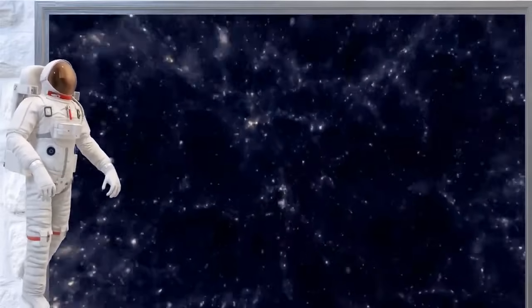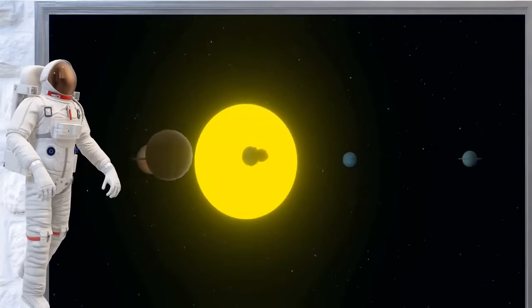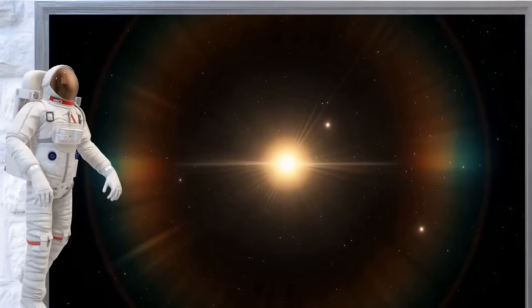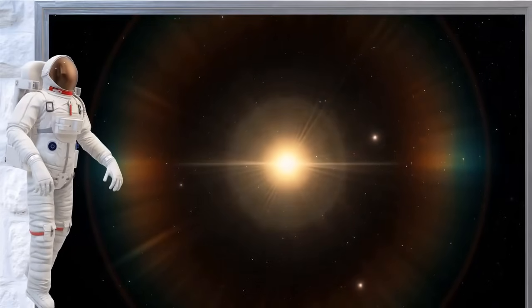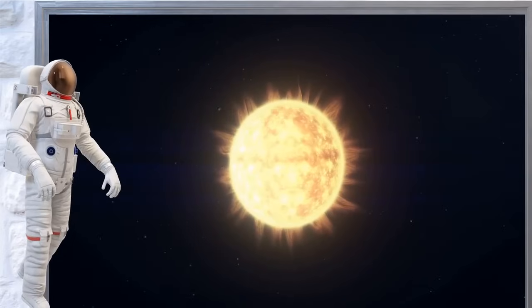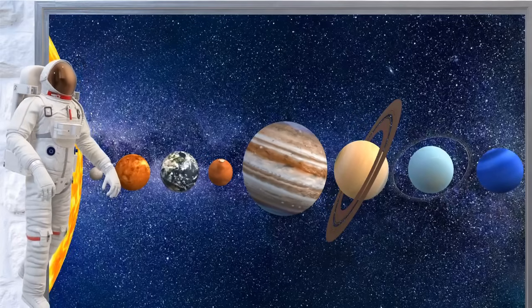The solar system is like a big family in space. It has 8 members called planets, and the head of this family is a huge, bright star called the Sun. The Sun is super important because it gives light and heat to all the planets. Let's visit each one of these planets.